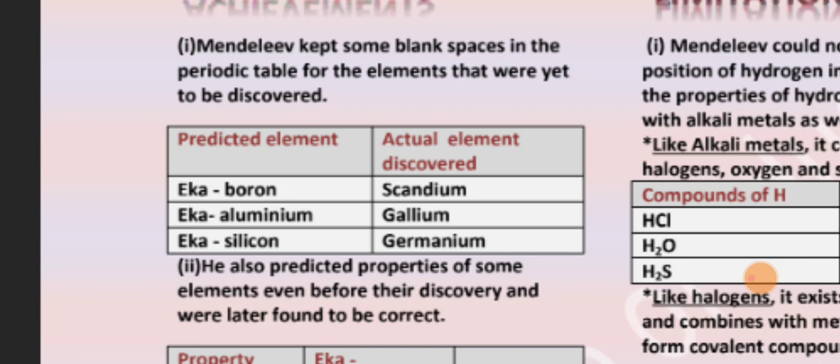Mendeleev kept some blank spaces in the periodic table so that when there is another discovery or other elements discovered, then it will be filled in the blank spaces, and what he thought was the same.